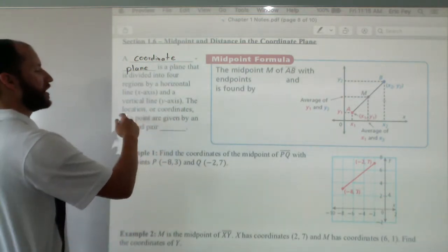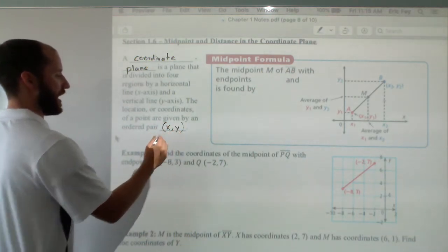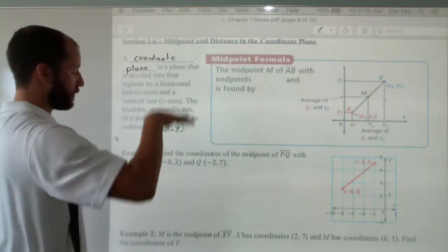Now the location or coordinates of a point are given by an ordered pair, x, y. x is your right and left movement, the horizontal axis. y is your up and down movement, the vertical axis.